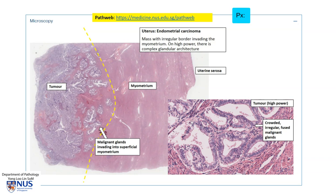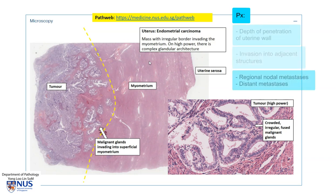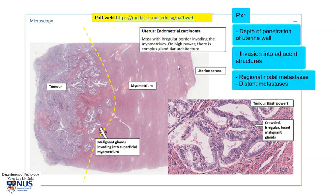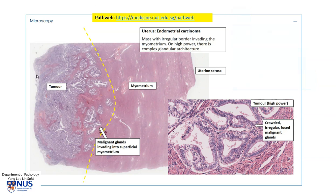In terms of prognostic factors, it is important to assess how deep the invasion is into the myometrium, whether there is penetration of the serosa, and whether there is local invasion into adjacent structures such as the vagina as well as surrounding organs like the bladder and the colon. Clinically, endometrial carcinoma usually presents with abnormal uterine bleeding — for example, intermenstrual bleeding if the patient is premenopausal, or often postmenopausal bleeding.